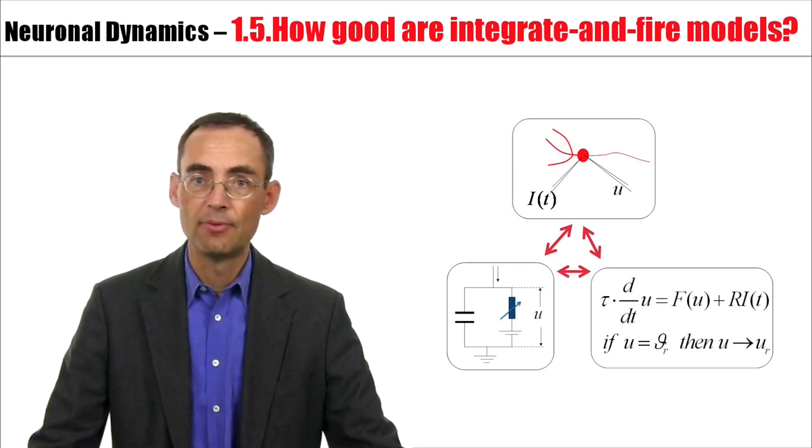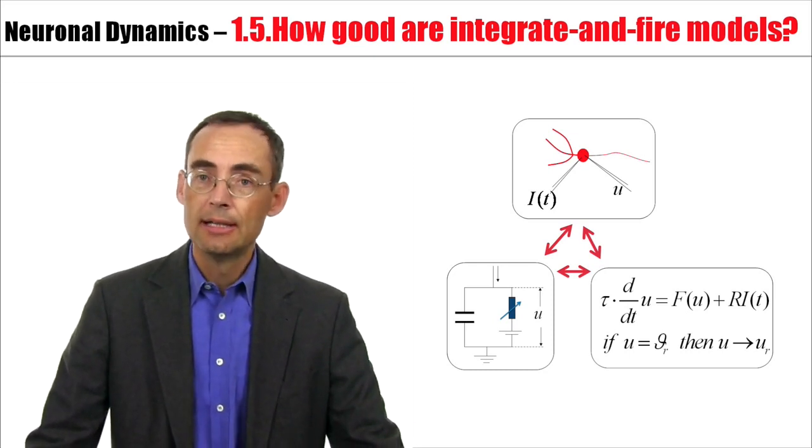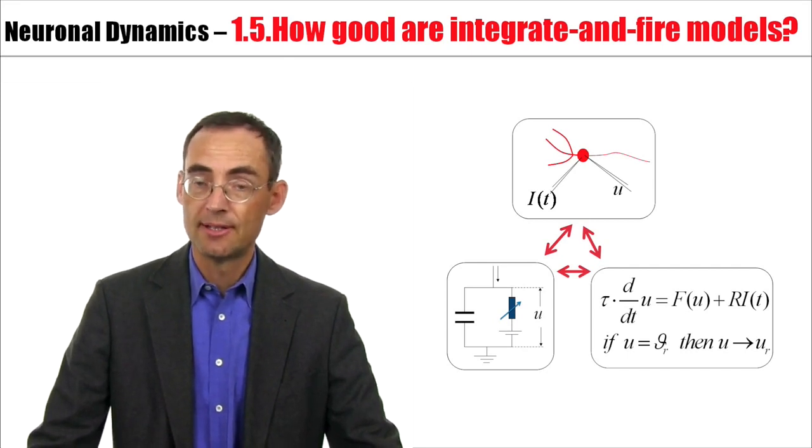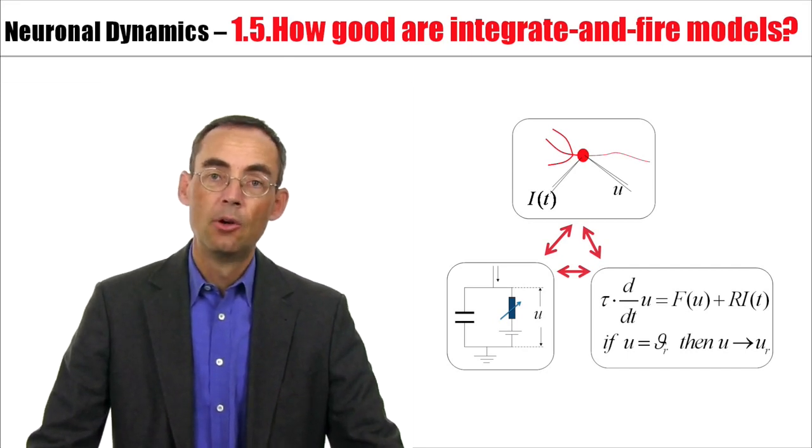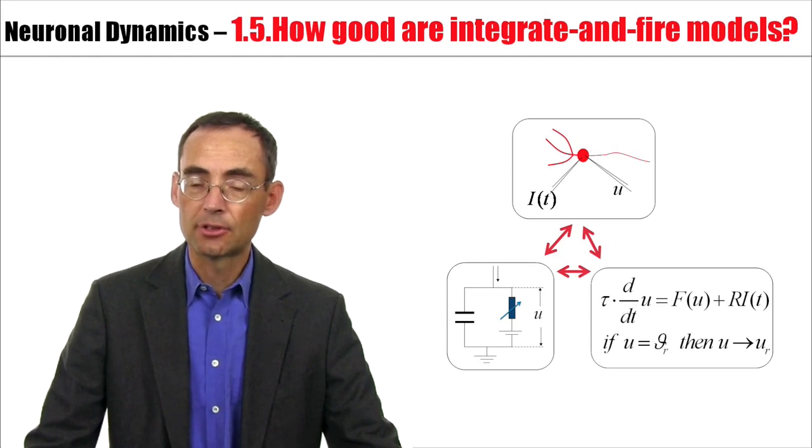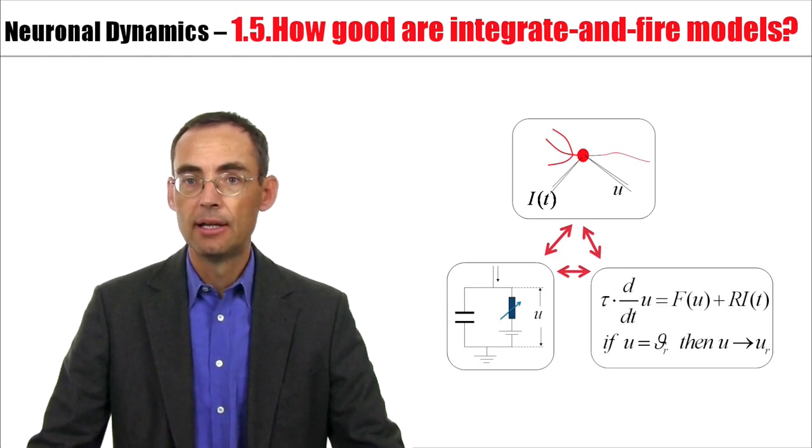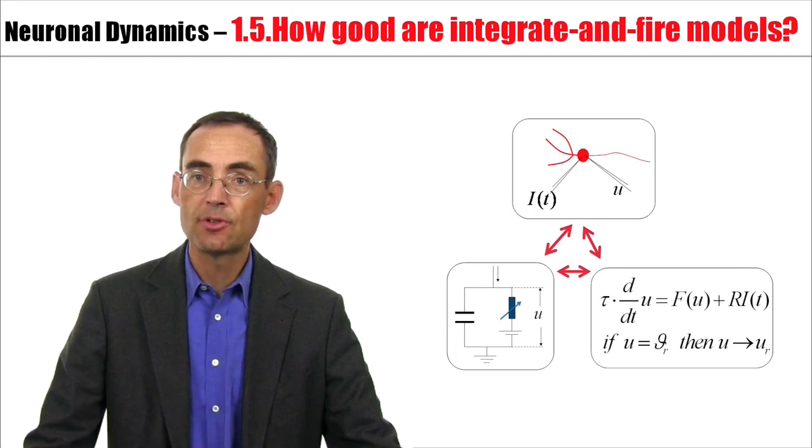We looked at linear differential equations as a model of a passive membrane. We added a threshold, made the model non-linear. It's a simple model. With all this mathematical effort, what can we buy? Is it any good? Has this anything to do with neuroscience?